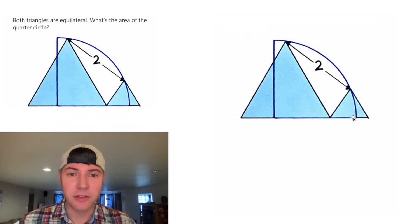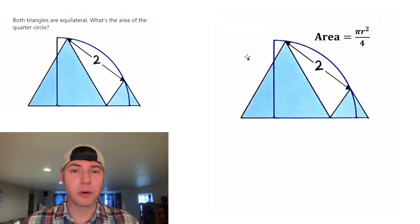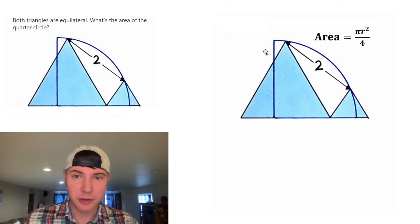So the question is asking us to find the area of this quarter circle. The area of a quarter circle is equal to pi r squared divided by four. So the only thing we gotta do is figure out what is the radius of this quarter circle.